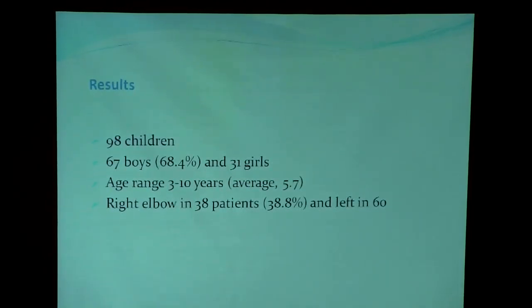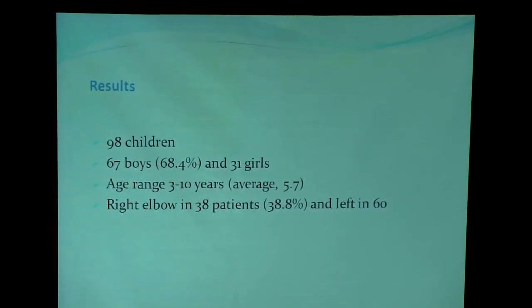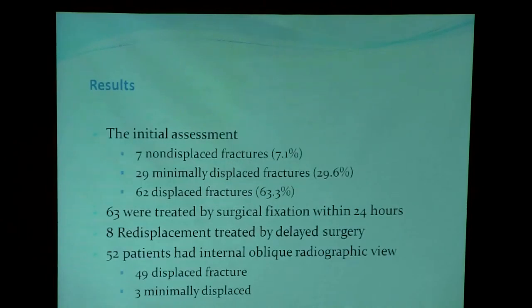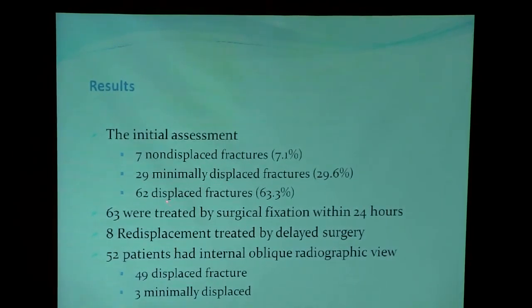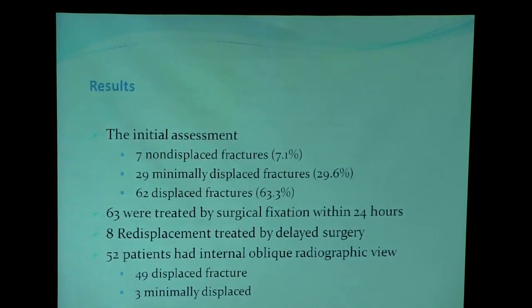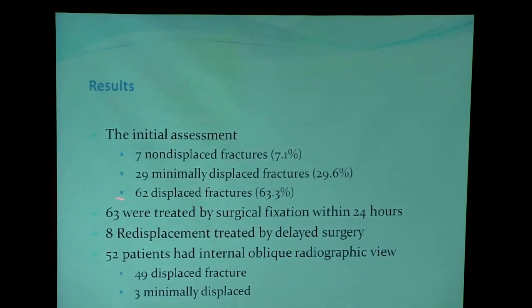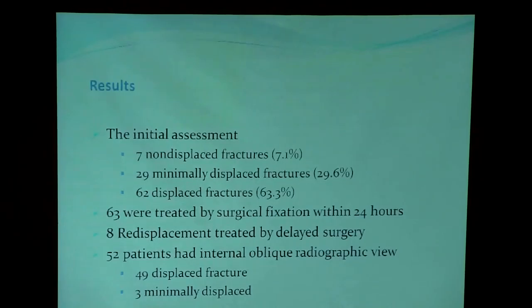We had 98 children enrolled in the study: 67 boys and 31 girls, aged 3 to 10 years. The right elbow was involved in 38 patients and the left in 60. During initial assessment, there were 7 non-displaced fractures, 29 minimally displaced fractures, and 62 displaced fractures. The non-displaced and minimally displaced fractures are much less than displaced, because some fractures treated by conservative treatment were followed in the emergency room rather than our orthopedic clinic.